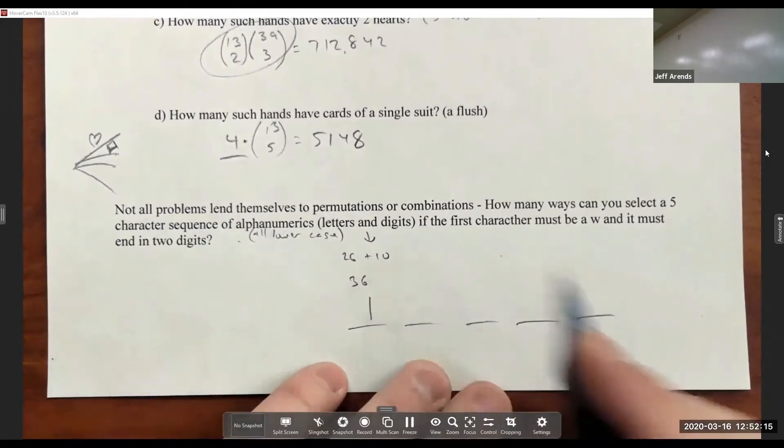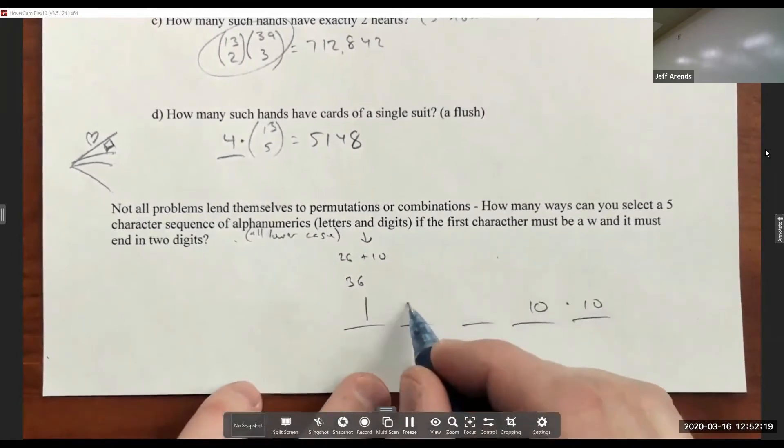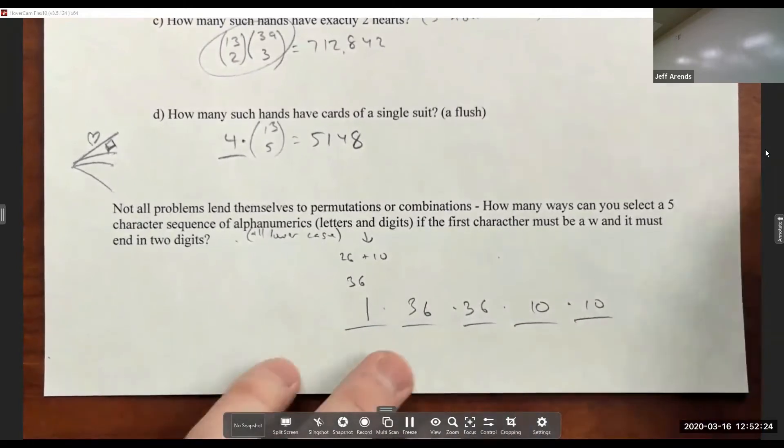It must end in two digits, so I know there's 10 choices for those two, for each of those. And there'd be 36 choices for the middle two because there's no other restrictions.